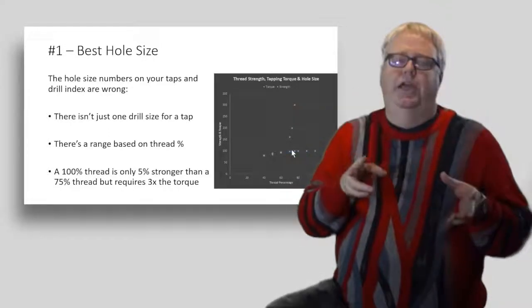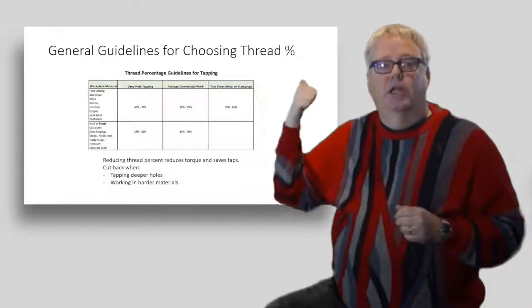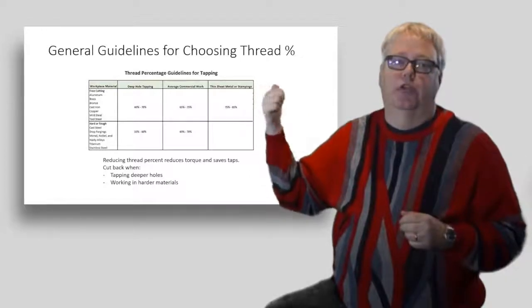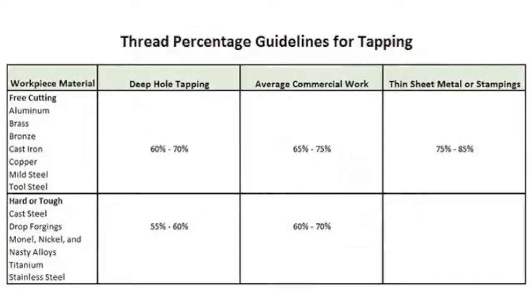Great strength, but way into that too much torque zone. Now here are some guidelines for thread percentages based on the different conditions you will encounter. Dial back to less than 75 percent when you tap a deep hole. Dial back for hard and tough materials too. Be sure to check the requirements on the job, as your customer may require a particular thread percentage. If they don't, or if the requirements are within the ranges of the chart, dial back the thread percentages. You'll reduce the torque needed and your taps will thank you.